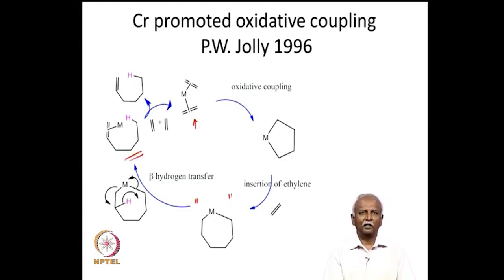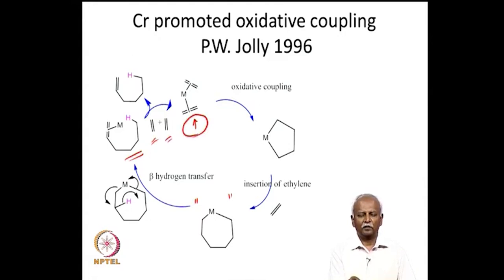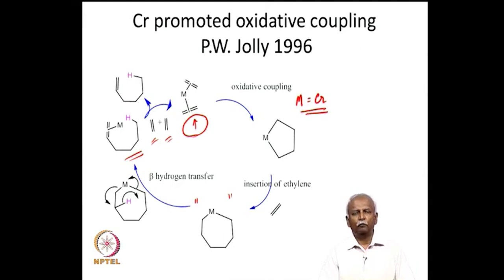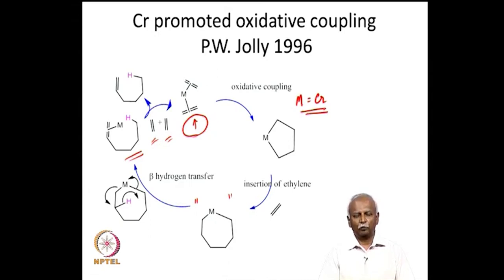Substituted olefins are less stable than unsubstituted olefins, so preferentially the hexene exchanges with ethylene molecules to regenerate the catalytically active species. Chromium is the best option, and a variety of chromium complexes have been tested. Notably, with nickel — a d8 system — you couple 2 ethylenes, whereas with a d6 system you couple 3 alkenes. There appears to be a very strong electronic effect in the coupling of alkenes.